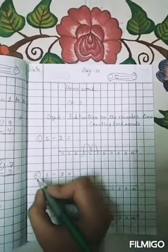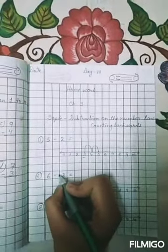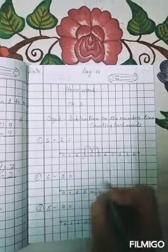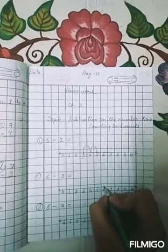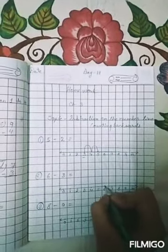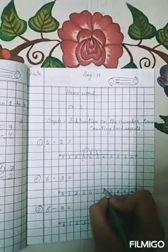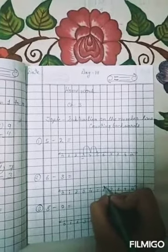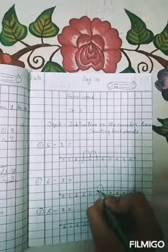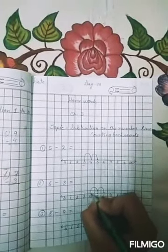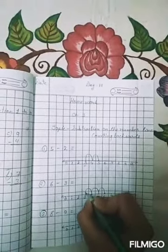Now point number 2: 6 subtract 3. We will repeat the same process. You are on point 6. Now subtract 3 from it. So go 3 steps back of 6. 1, 2, 3.